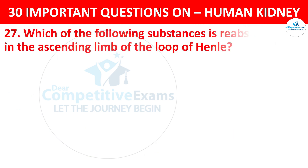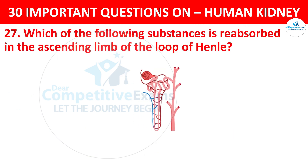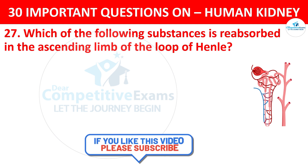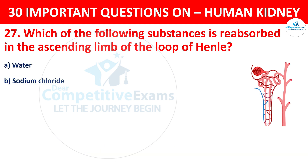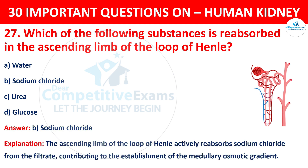Question number 27. Which of the following substances is reabsorbed by the ascending limb of the loop of Henle? Your options are water, sodium chloride, urea, or glucose. The correct answer is B, that is sodium chloride. The ascending limb of the loop of Henle actively reabsorbs sodium chloride from the filtrate, contributing to the establishment of the medullary osmotic gradient.